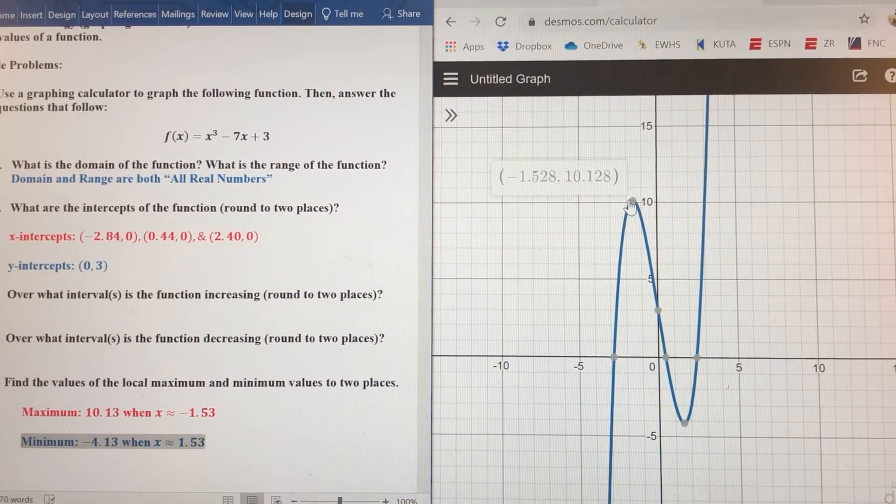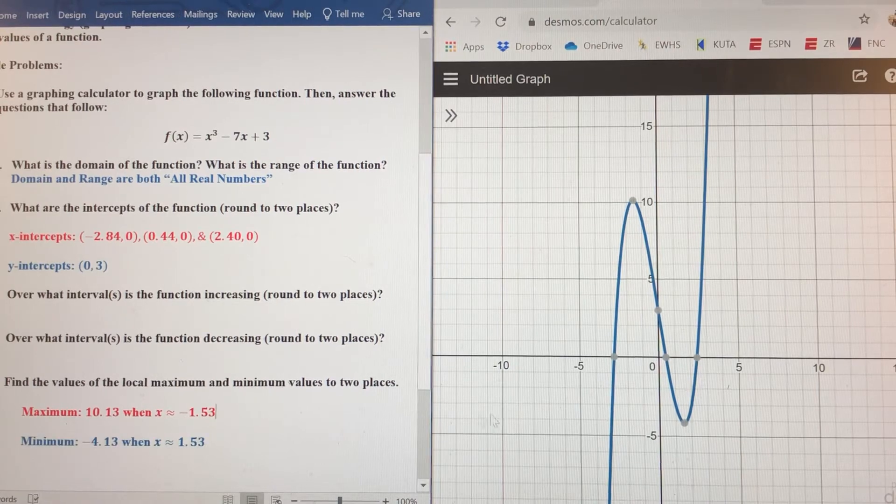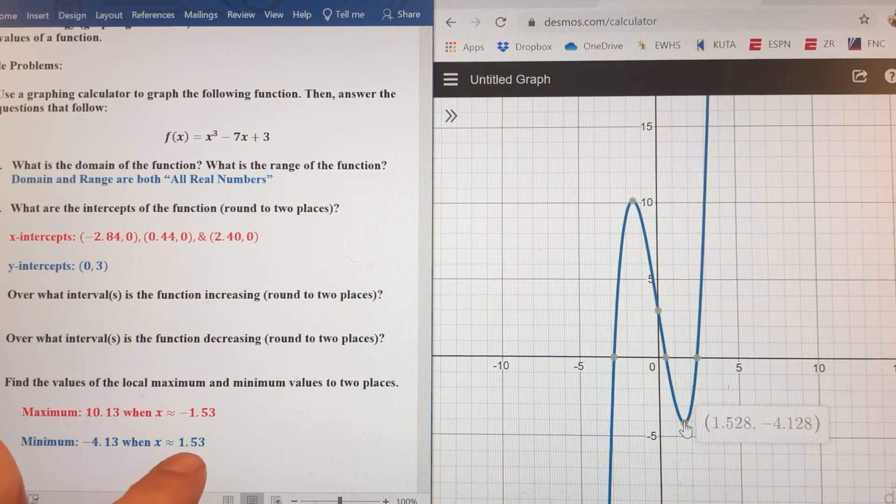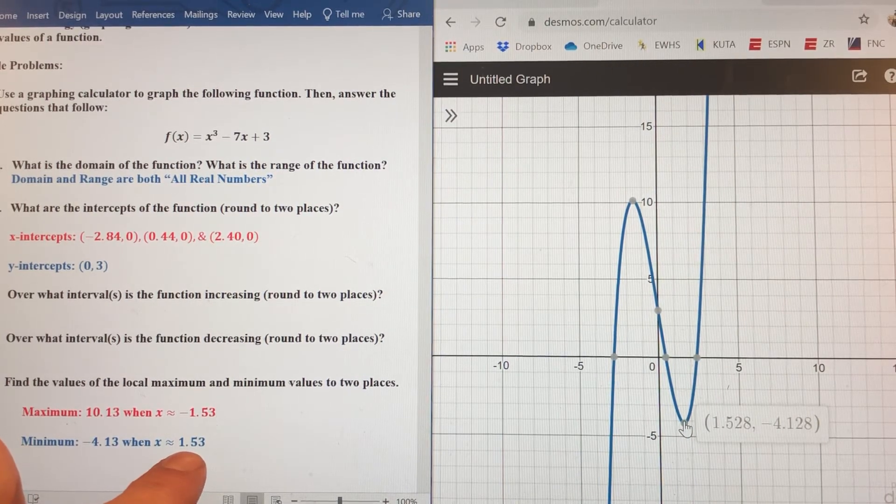And then the minimum value is going to be at about negative 4.13 when x is positive 1.53.